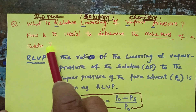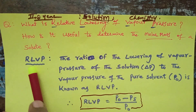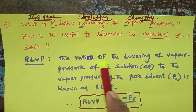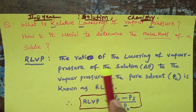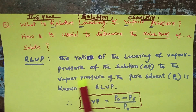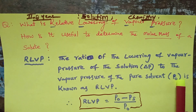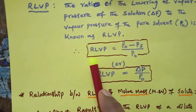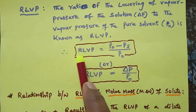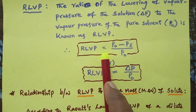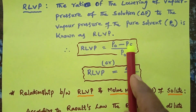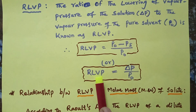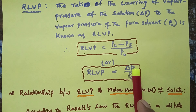The definition of relative lowering of vapor pressure: the ratio of the lowering of vapor pressure of the solution to the vapor pressure of the pure solvent is known as relative lowering of vapor pressure. The mathematical formula is: relative lowering of vapor pressure = (P⁰ − Ps) / P⁰.